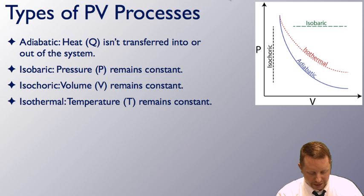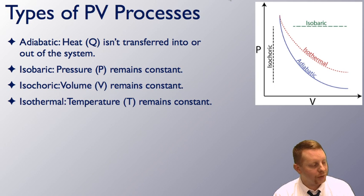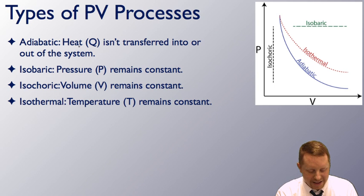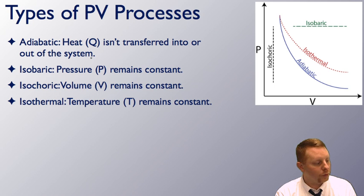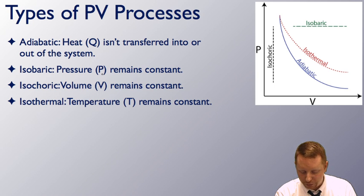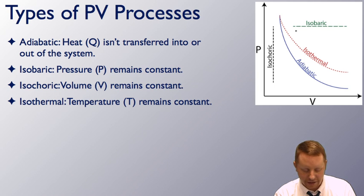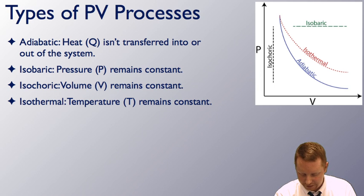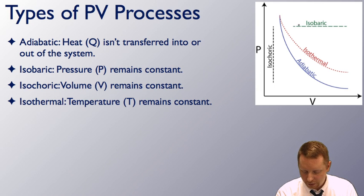There are several important types of PV processes. In an adiabatic process, heat Q is not transferred into or out of the system. In an isobaric process, pressure remains constant — shown as a horizontal line on a PV diagram. In an isochoric process, volume remains constant — a vertical line on a PV diagram. And in an isothermal process, temperature remains constant. Let's go into each of these in a bit more depth.